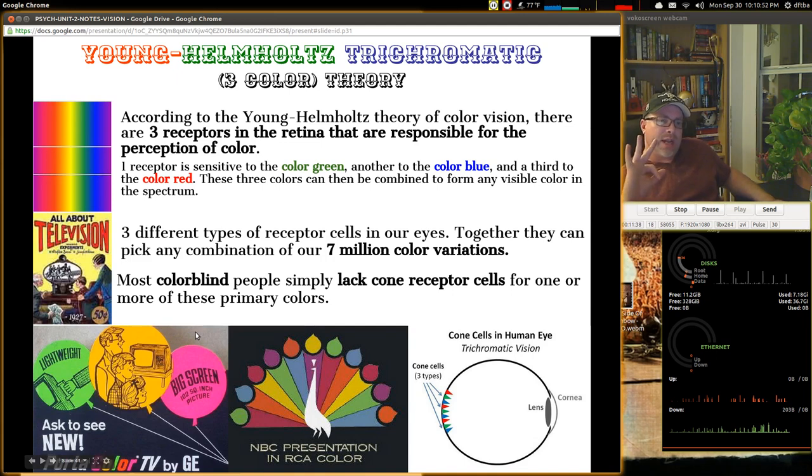So three different types of receptor cells in our eyes. And together they can pick any combination of our 7 million color combinations. Most colorblind people simply lack cone receptor cells for one or more of the primary colors. And so they have difficulty in creating colors off of the combinations, according to this theory.